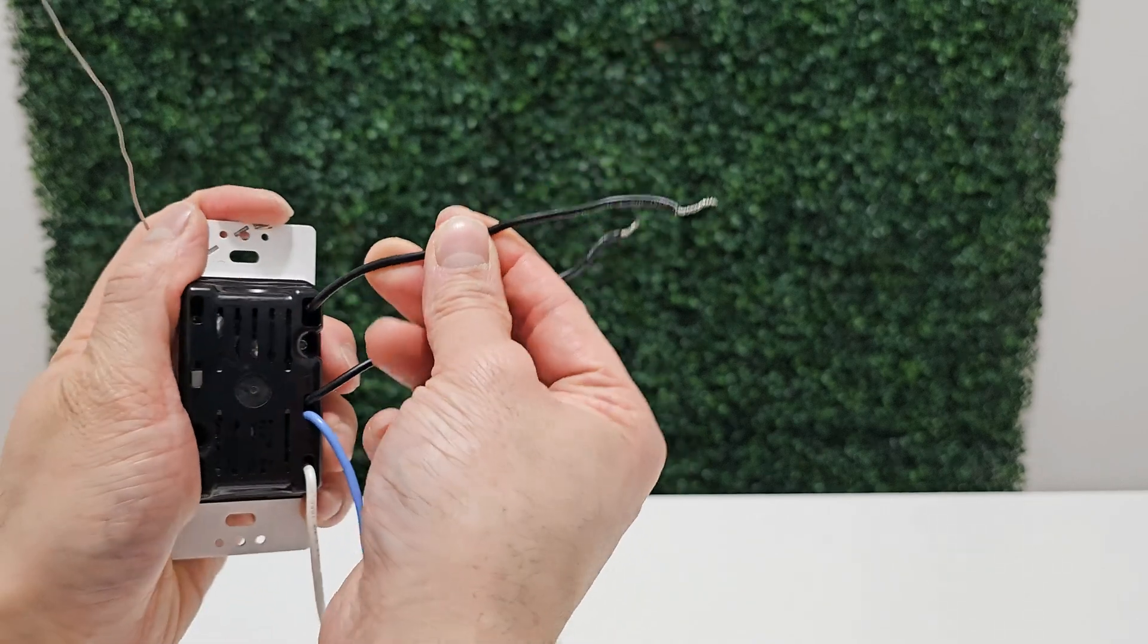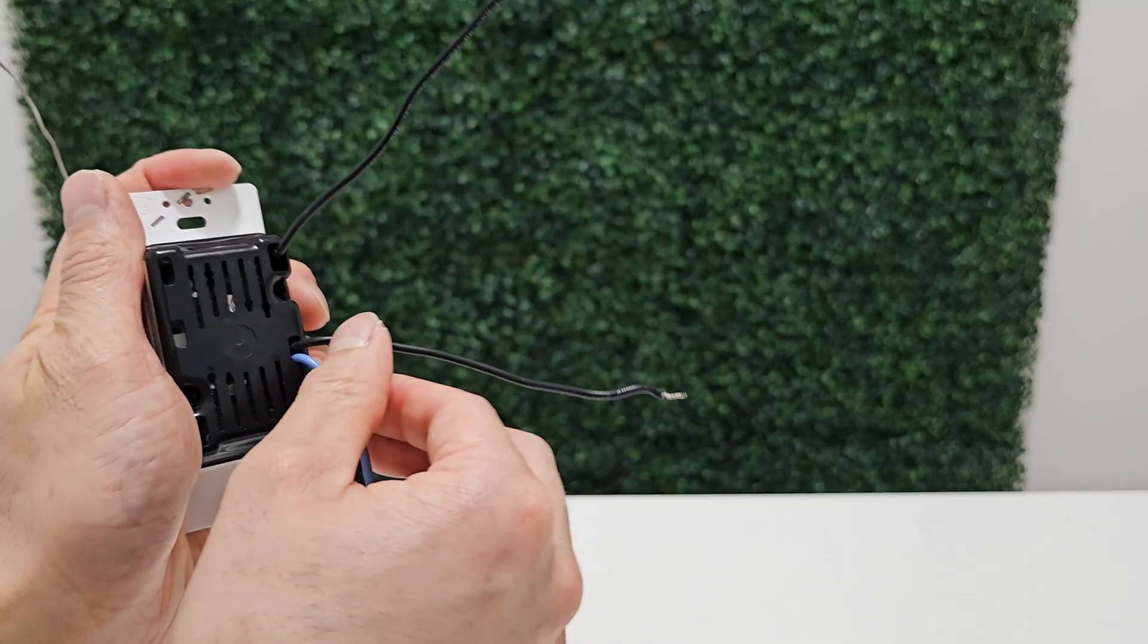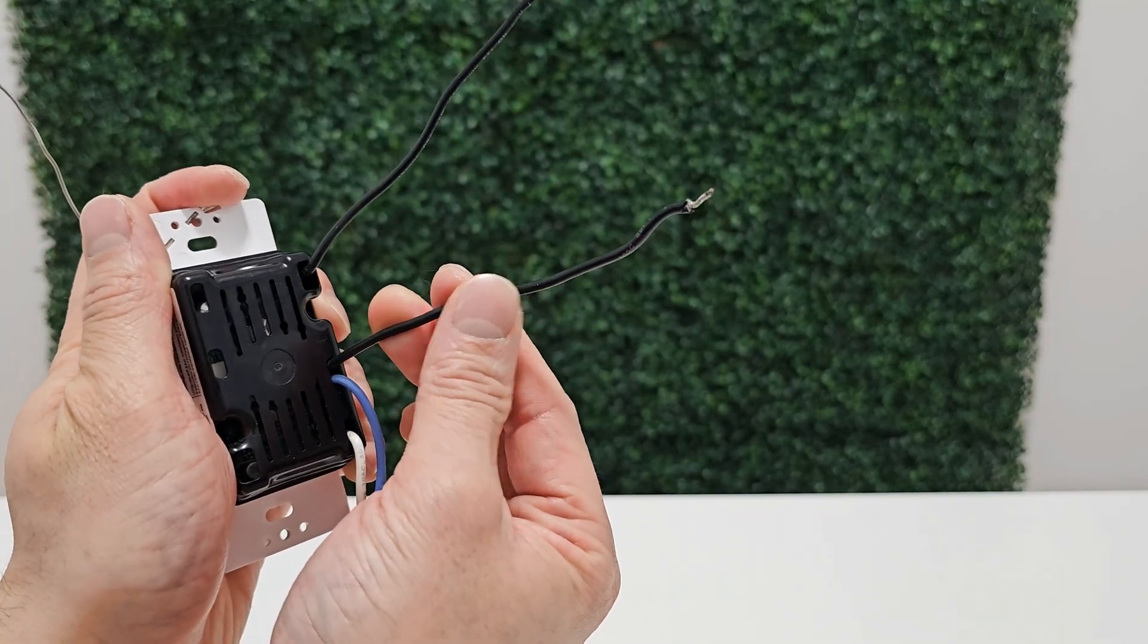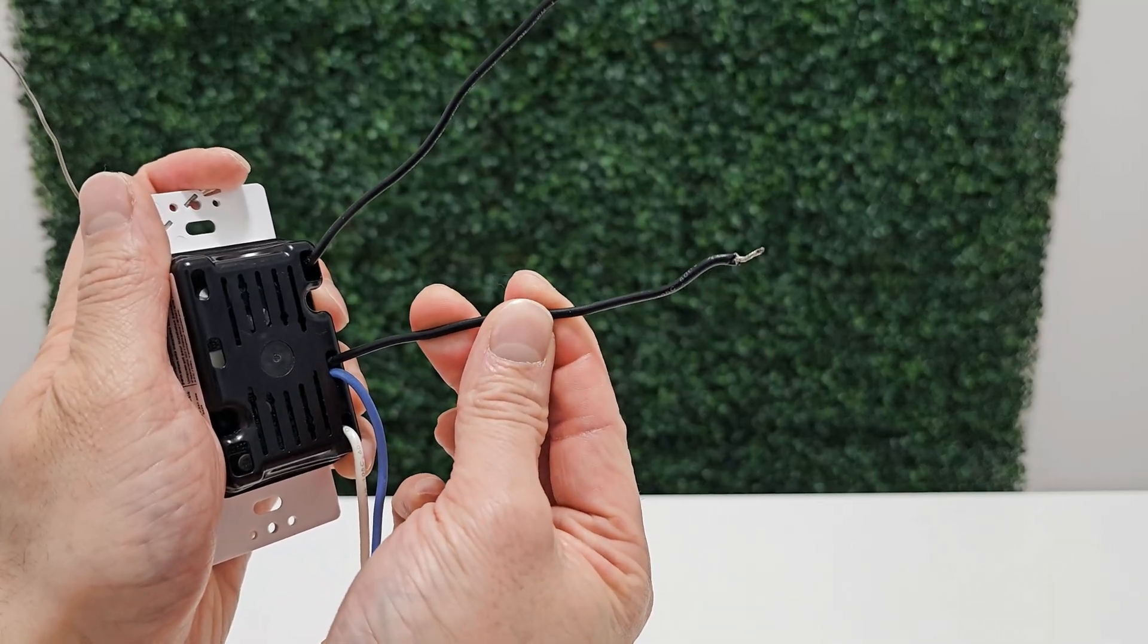This black wire here, we will be connecting it to a power source. And this black wire here, we will be connecting it to a light fixture. It's also called the switch leg.